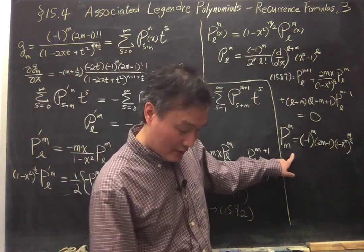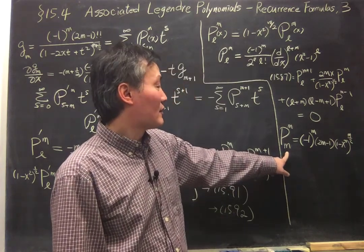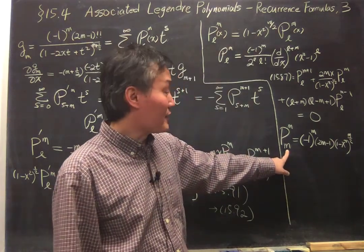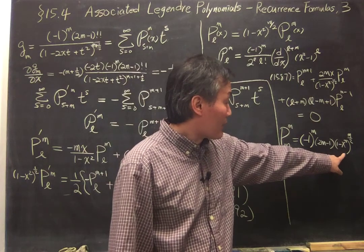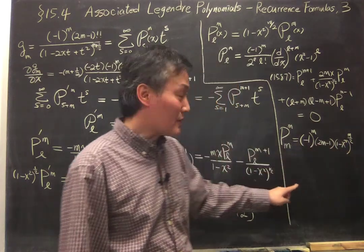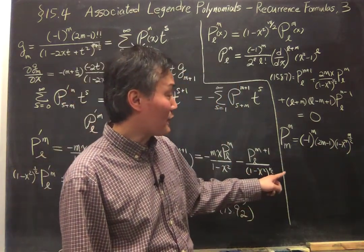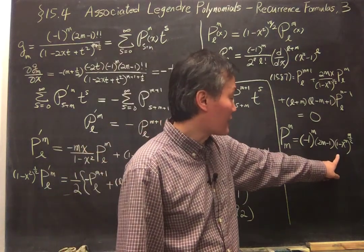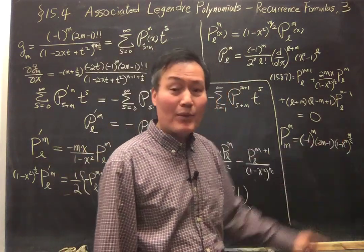Okay, so that's one function that you get very easily, and by the way, this 1 minus x squared to the square root, going back to the spherical angle, it's sin theta, so it is sin theta to the m power.